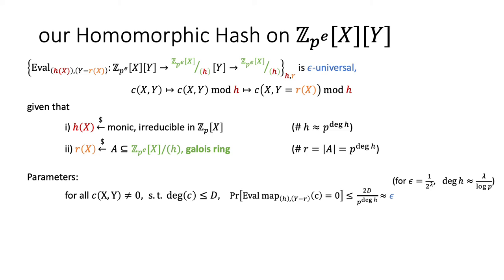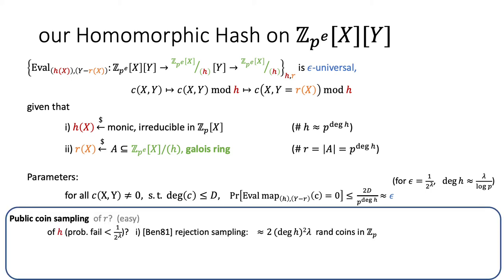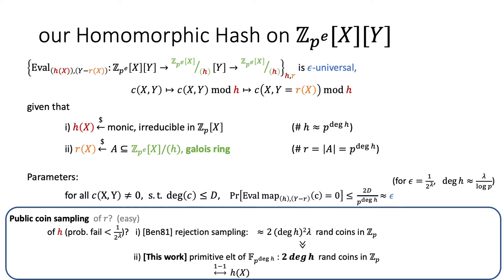Note that the degree of h is not very large — it can be similar to or less than the security parameter lambda. One important detail is that we need to provide a public coin sampling process for the irreducible polynomial h(x). This can be done by simple rejection sampling, where one samples a random polynomial then checks if it is reducible. In our work, we also provide a more efficient sampling process for h, which uses much fewer random coins than the naive method. With this, the sampling of the homomorphic hash can also be made non-interactive via the Fiat-Shamir heuristic.